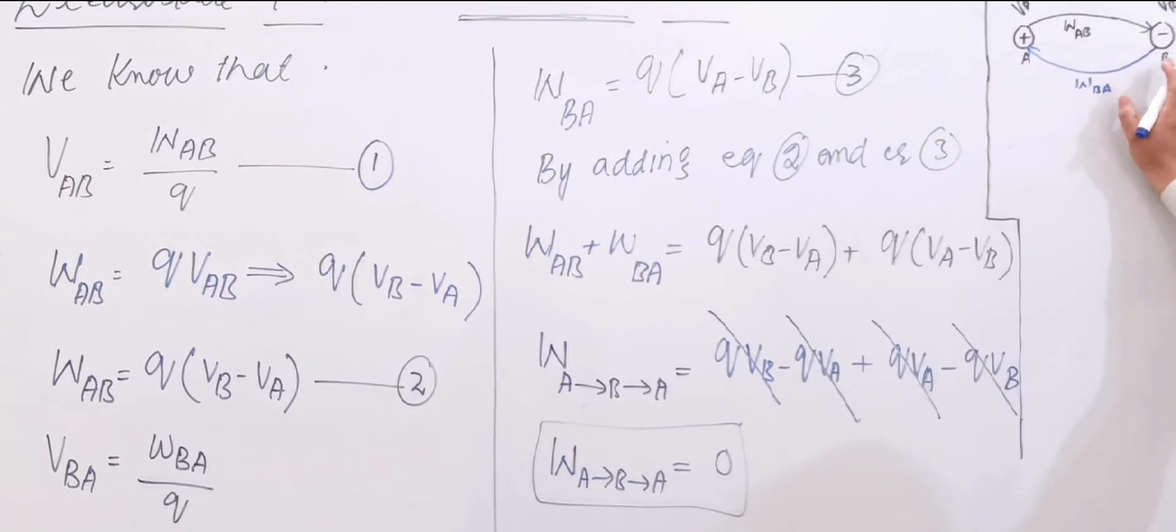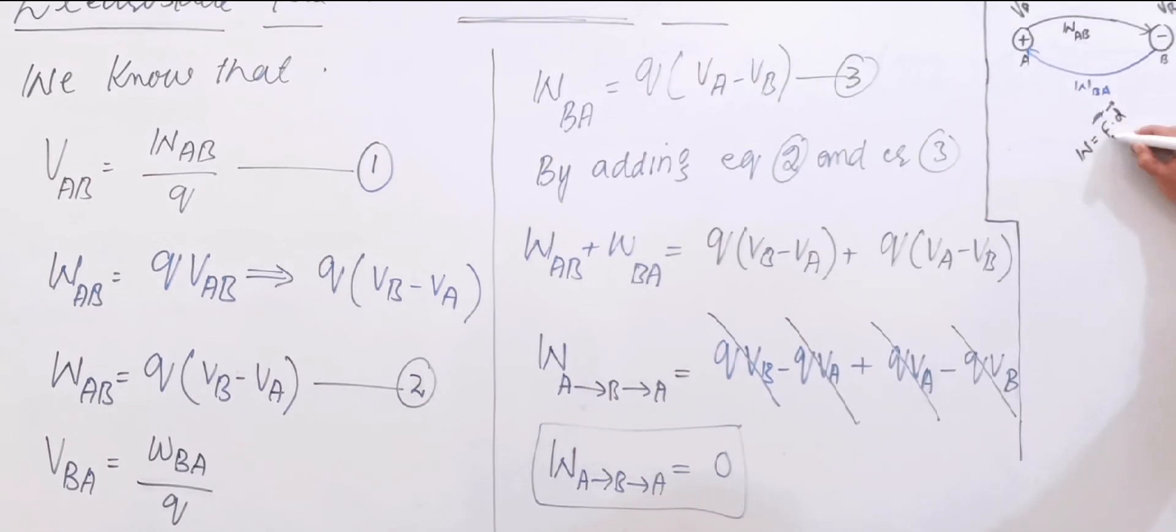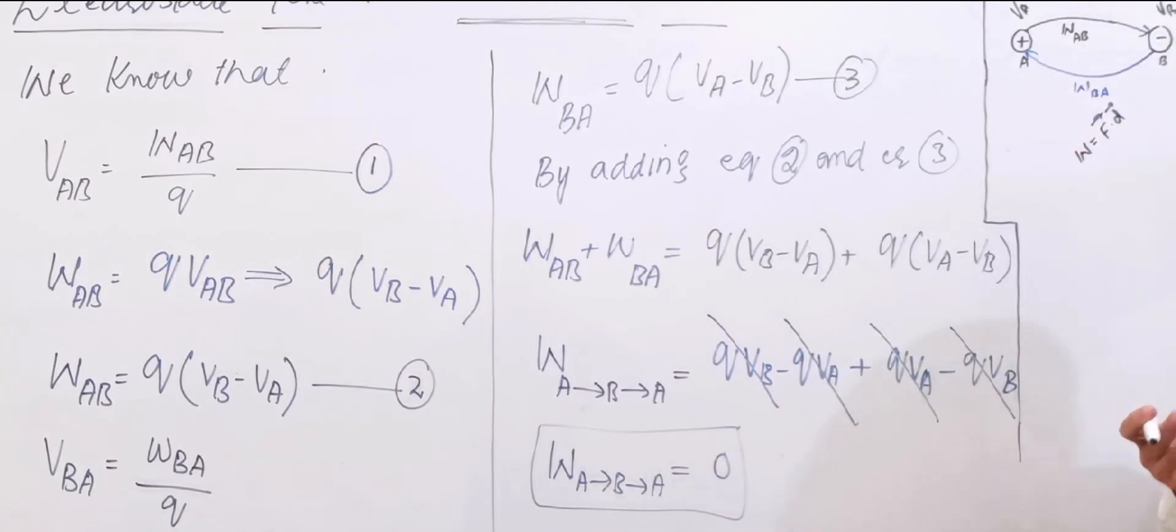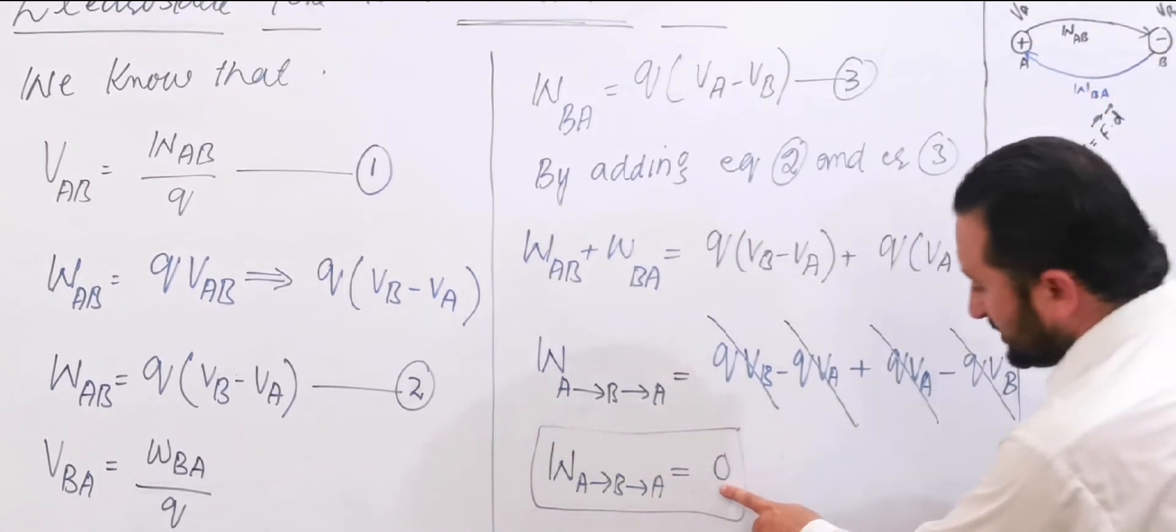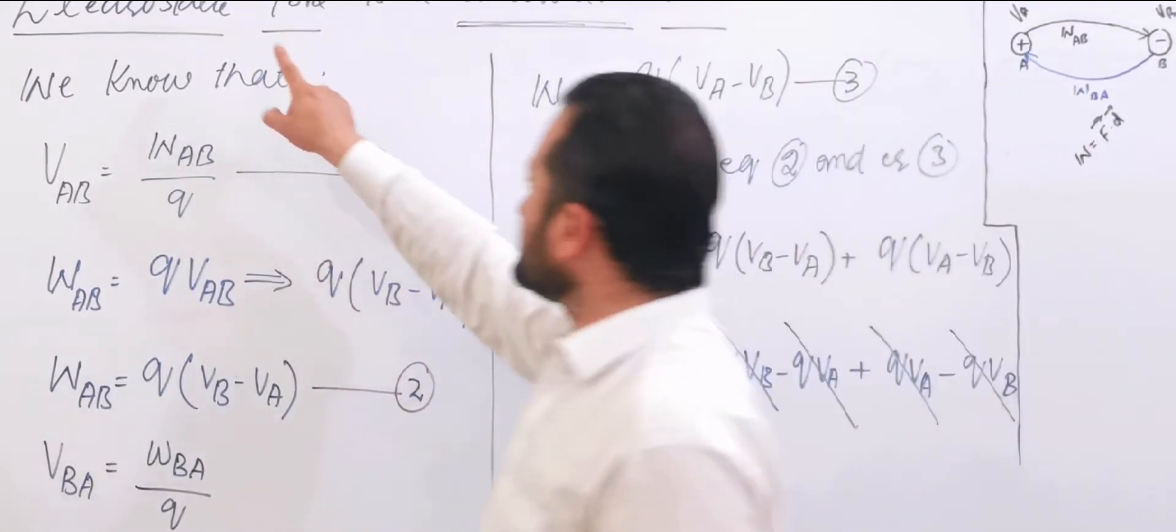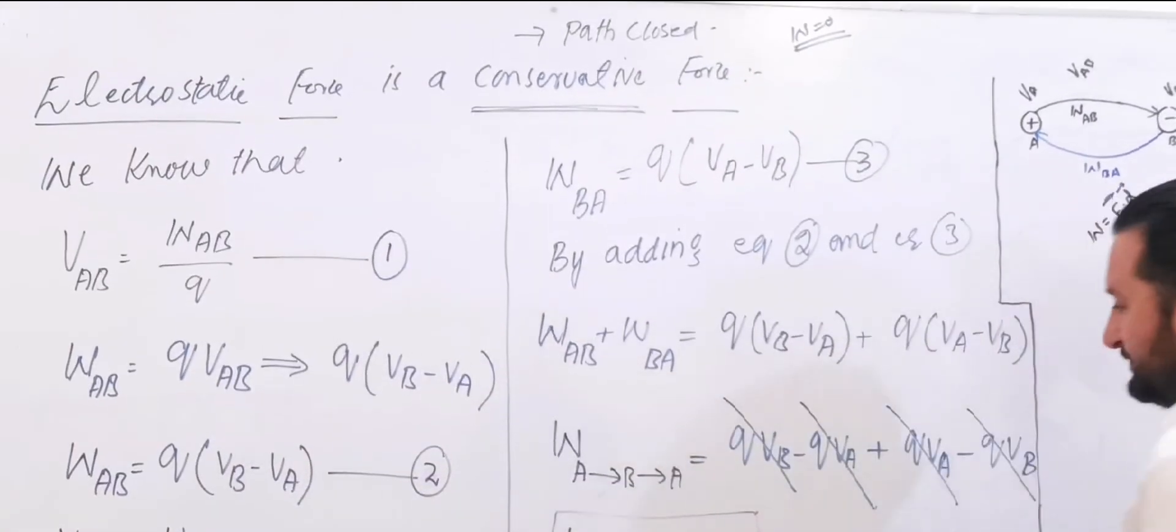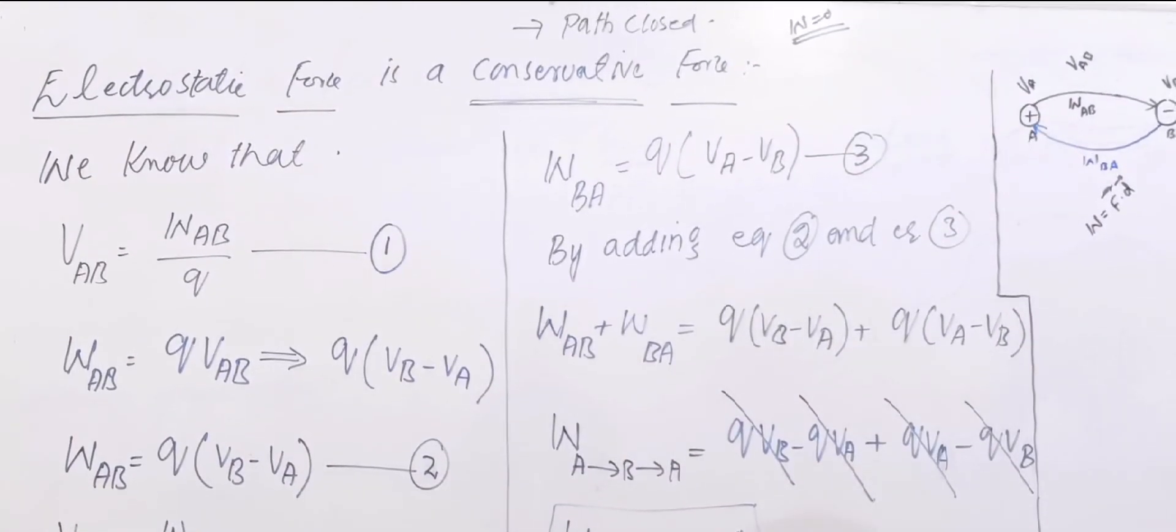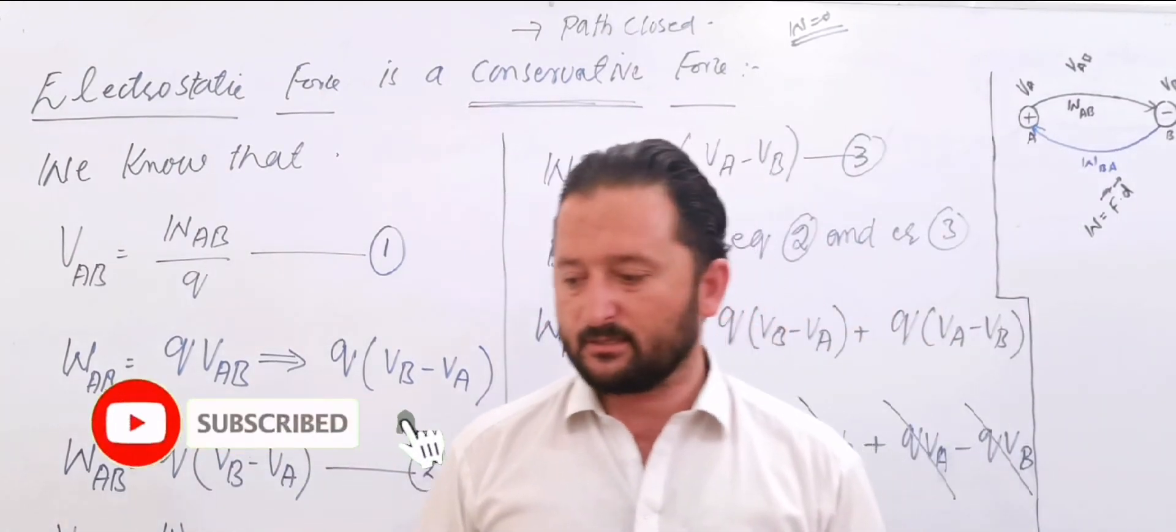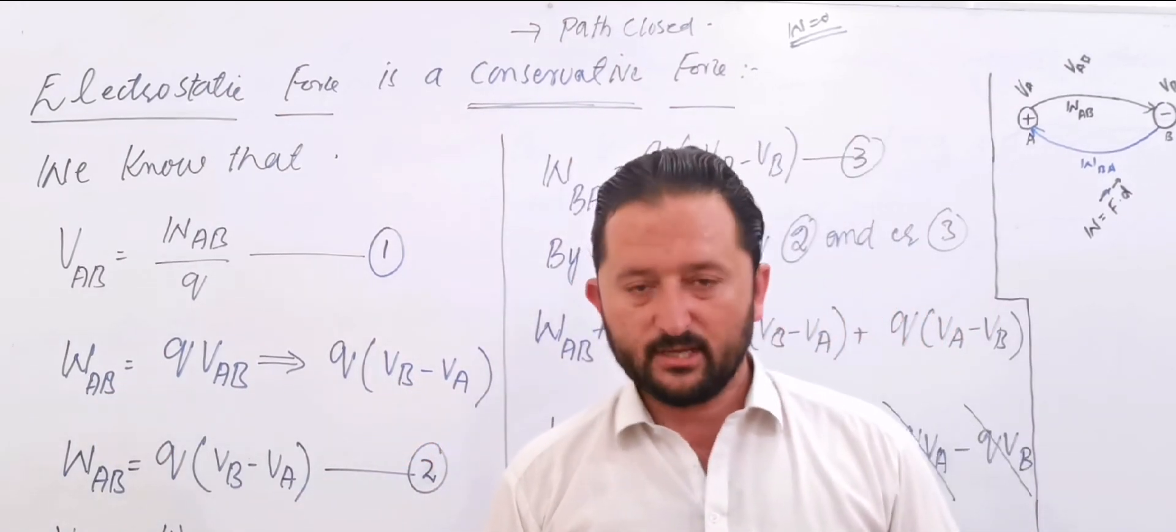We have electrostatic force. We have work defined. Electrostatic force between two charges, close path work is zero. We can have conservative force. Electrostatic force is a conservative force concept. Thank you.